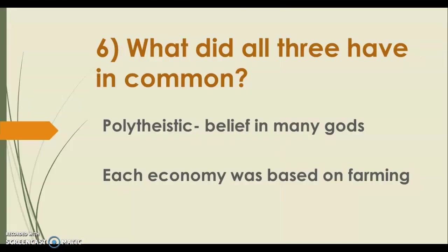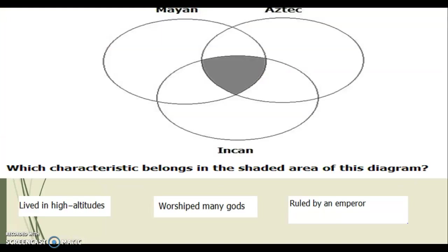What did all three civilizations have in common? All three were polytheistic, meaning they believed in many gods. And each economy was based on farming. A Venn diagram question on your test asks which characteristic belongs in the shared area: worshipping many gods fits all three. Living in high altitudes applies only to the Incas, and being ruled by an emperor applies to the Mayans and Aztecs, but not the Incas.